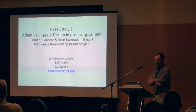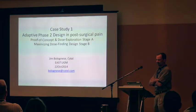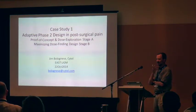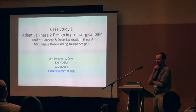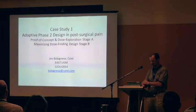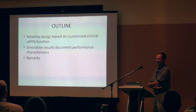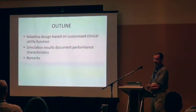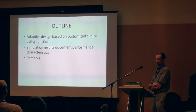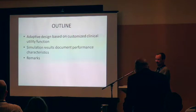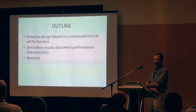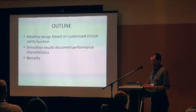The first one is in post-surgical pain. It's a combination proof of concept and dose exploration in the first stage, and then we did a maximizing design in the second stage to find the dose with maximum clinical utility. The outline for this case study is to talk about the adaptive design, define the customized clinical utility function used to drive the randomization algorithm, show simulation results documenting the performance characteristics, and then end with a few remarks.